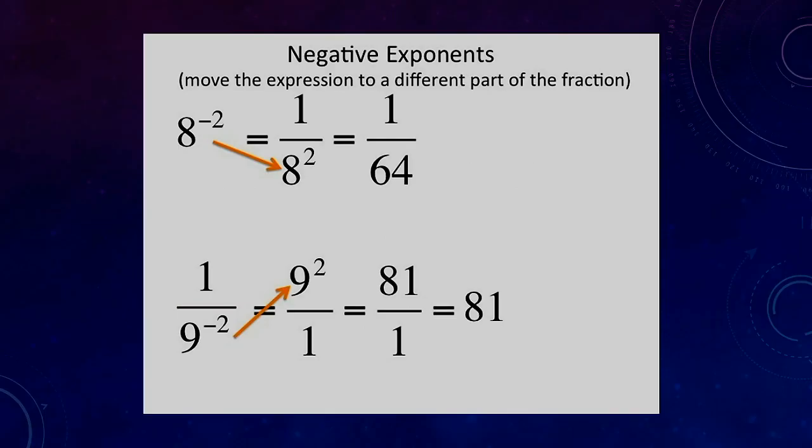The negative exponent. This is a number which is on the wrong side of the fraction line. So to solve we simply reciprocate.